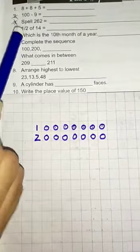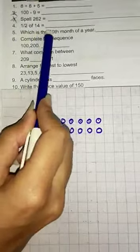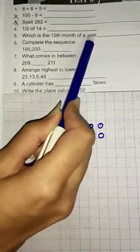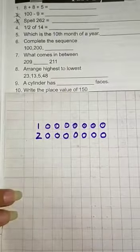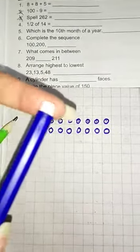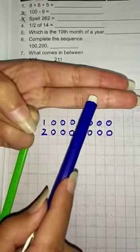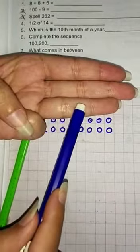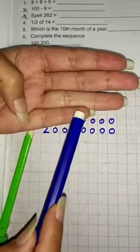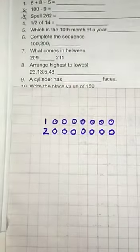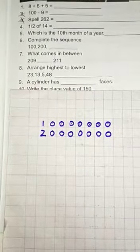Question number 5. Which is the 10th month of a year? Start from January. So January, February, March, April, May, June, July, August, September, October. So October is the 10th month of a year.